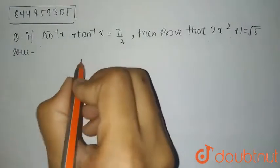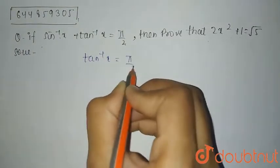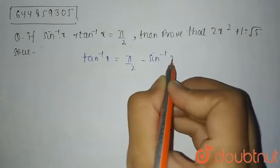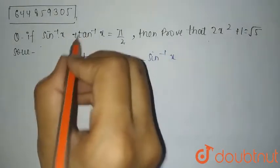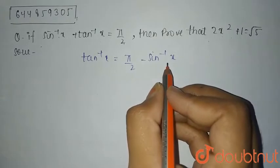So first of all we can write that tan inverse x equals pi by 2 minus sin inverse x, by taking tan to the same side and sin inverse x to the next side.